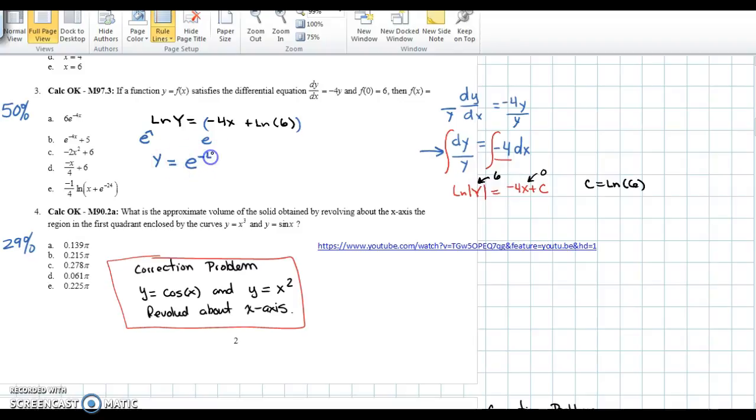to the negative 4x times e to the LN of 6, or y equals 6 times e to the negative 4x. That's our answer. Your practice problem, or your correction problem as we'll call it, is top right.